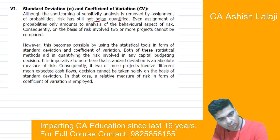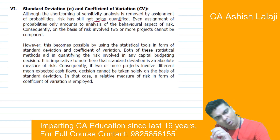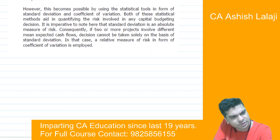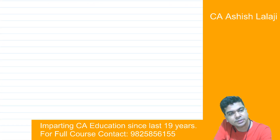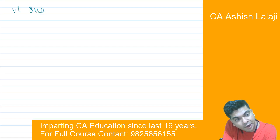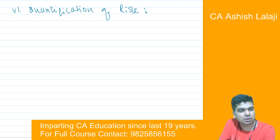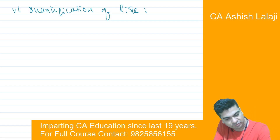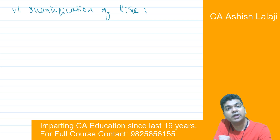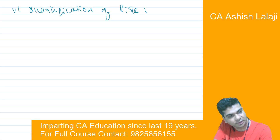I would like you to write in your notebooks: standard deviation, coefficient of variation. Alternatively, you can give the heading 'quantification of risk' — yes, that will be a better term: quantification of risk. We will see the statistical formula for how the quantification of risk can be carried out.